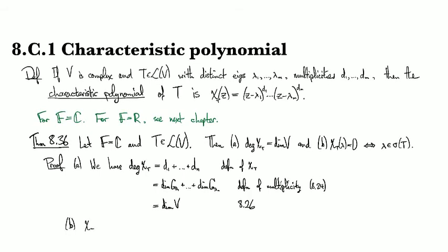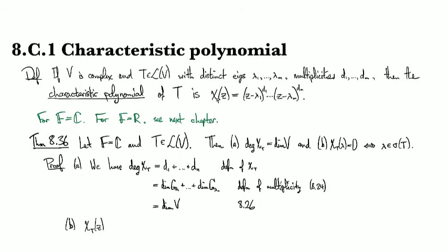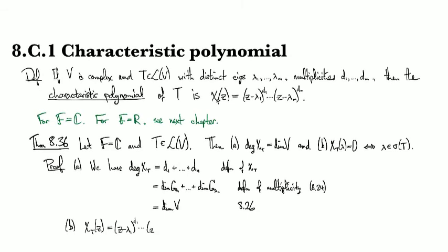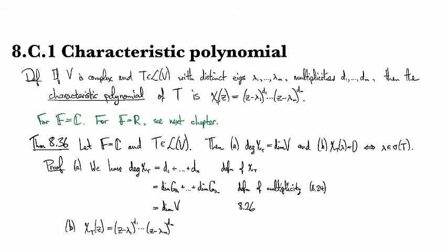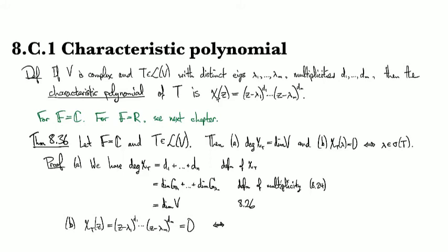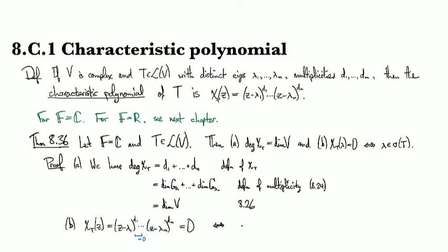If we have that the characteristic polynomial is z minus lambda 1 raised to the d1 times all the other factors z minus lambda m raised to the dm, if this is equal to zero, then from what we know about polynomials, this can be true if and only if one of those particular factors is equal to zero, which means that z minus lambda j equals zero for some j.